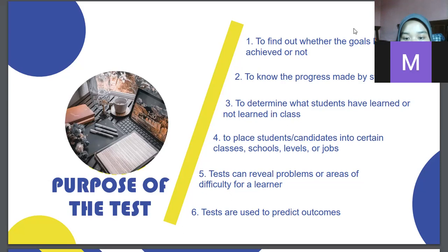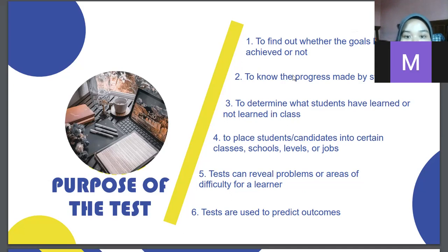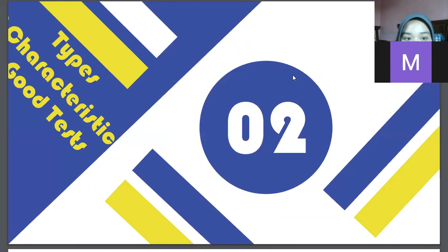The last purpose is that tests are used to predict outcomes. We use tests to predict whether or not a learner will be able to do a certain job, task, use language, study at a university, or perform well in a particular school, college, or university. And then we move to types and characteristics of good tests.